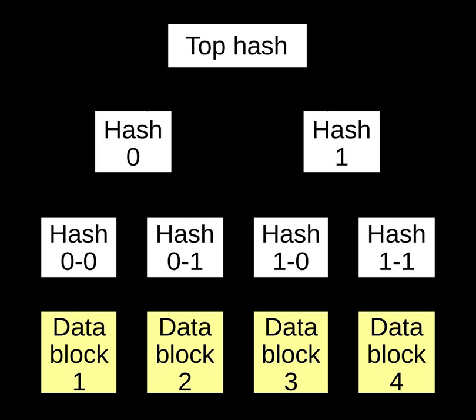Usually, a cryptographic hash function such as SHA-1, Whirlpool, or Tiger is used for the hashing. If the hash tree only needs to protect against unintentional damage, much less secure checksums such as CRCs can be used.